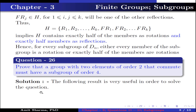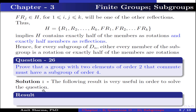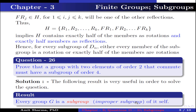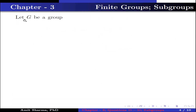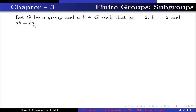The following result is very useful in order to solve the next question. Every group G is a subgroup of itself, known as an improper subgroup. Let G be a group and a, b belong to G such that the order of a equals 2 and the order of b equals 2, and ab = ba. Since a and b belong to G, this implies ab belongs to G by the closure axiom.